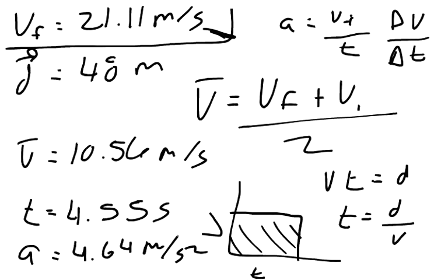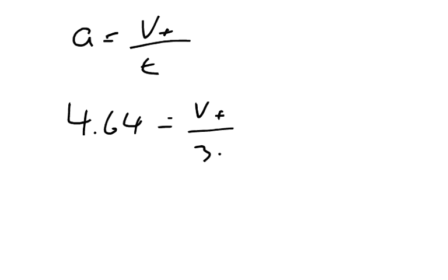The next part of the question is, it says, find its displacement at 3.3 seconds. Okay, so that 3.3 seconds, find its displacement. Well, if the average acceleration equals the final velocity over time, and our acceleration is 4.64. So, 4.64 equals our final velocity over 3.3 seconds.